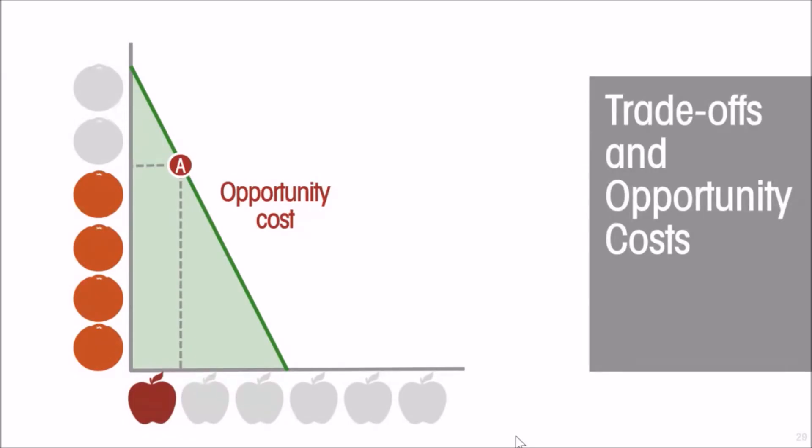So here, if we are producing four oranges and one apple, in order to produce one more apple, the opportunity cost is the two oranges we have to give up. If we want to have those two oranges, then the opportunity cost is the apple that we give up. That is reflected by the slope of that line.